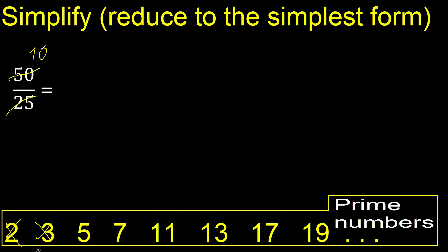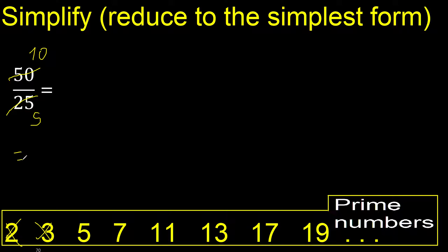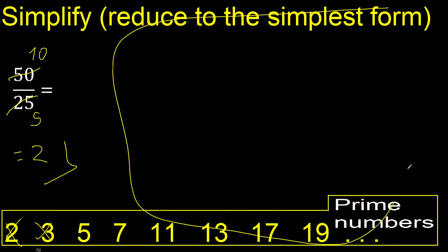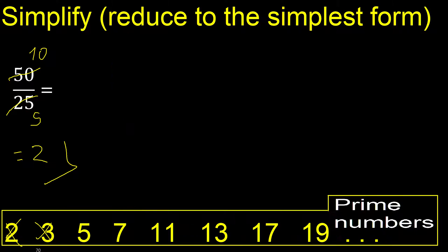Divided by 5: 50 divided by 5 is 10, 25 divided by 5 is 5. And 10 can be divided by 5 — 10 divided by 5 is 2. Finished. More examples here.